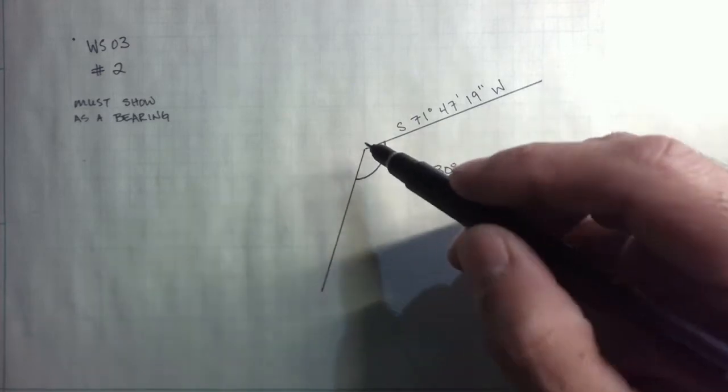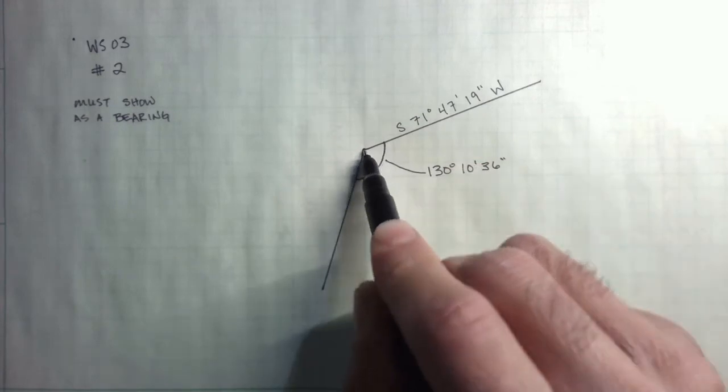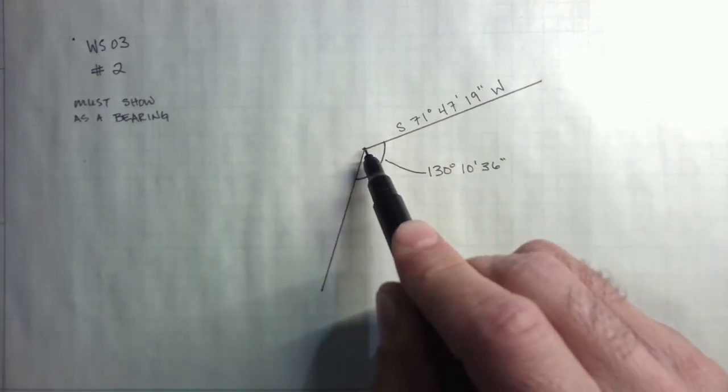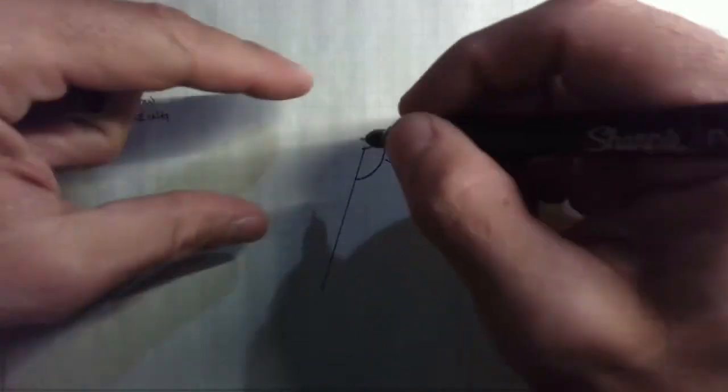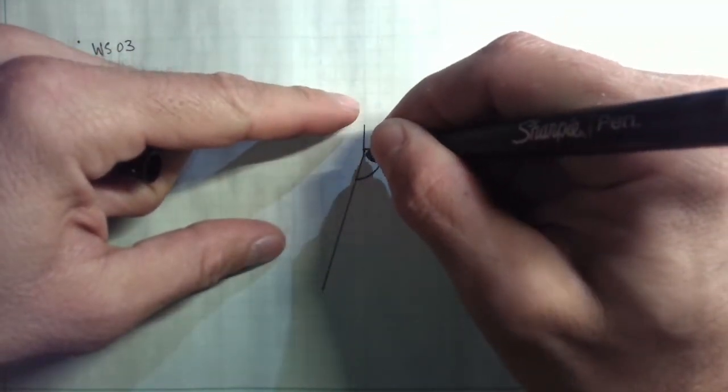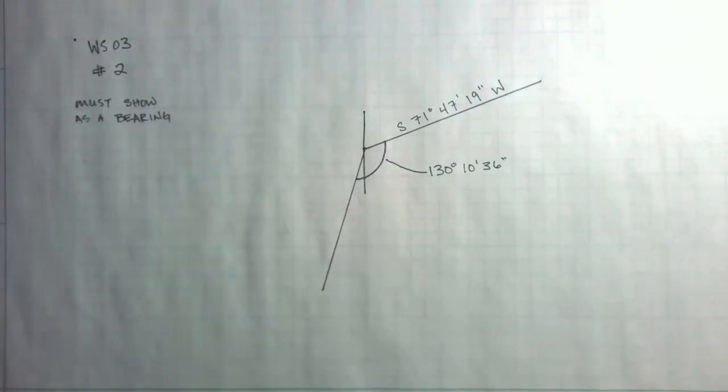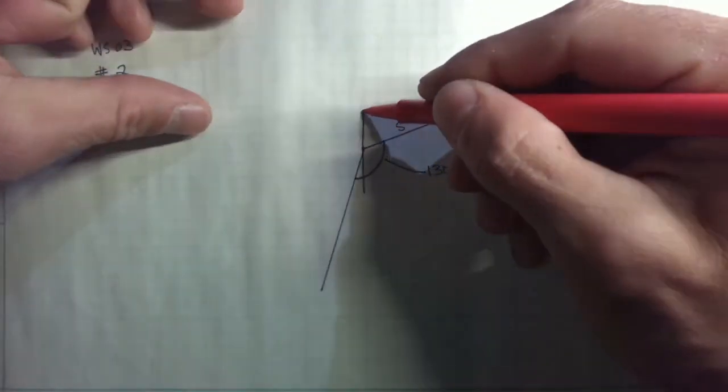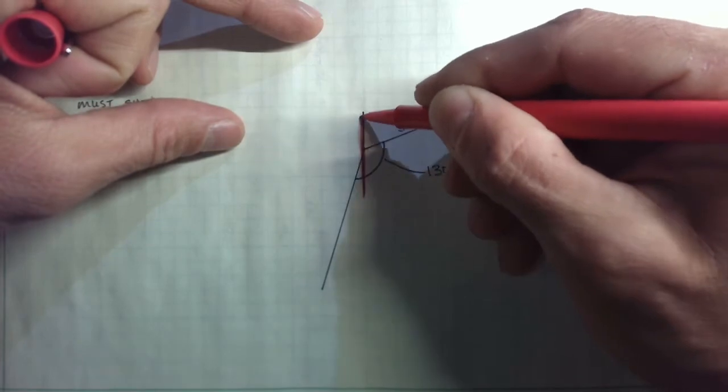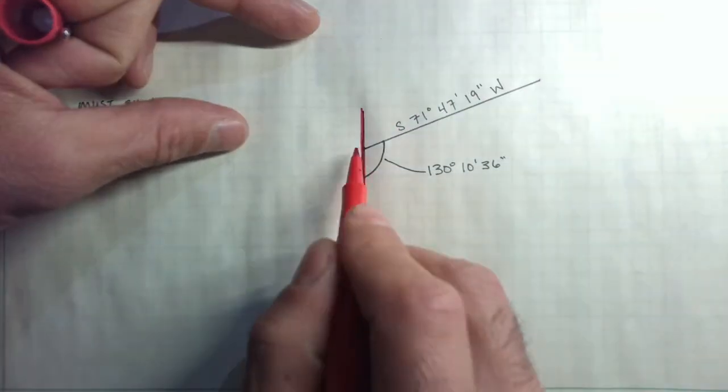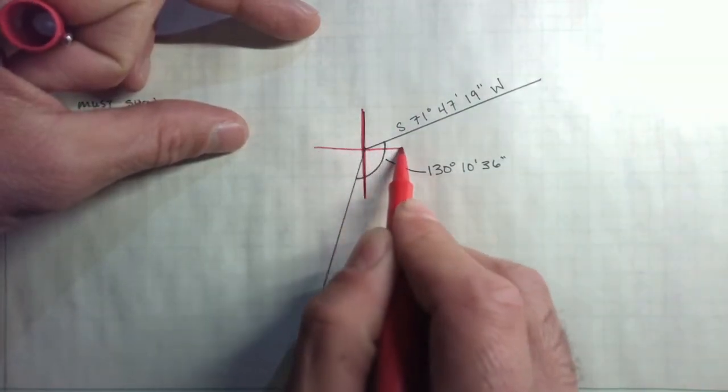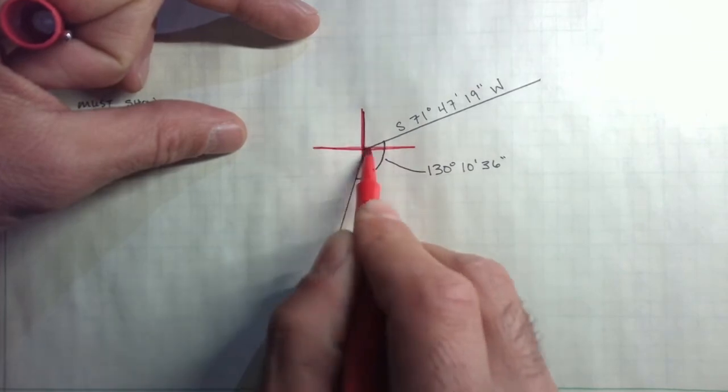And I want to imagine that I'm standing at this point where the two lines intersect. And if I'm standing at that point, it's helpful to me, I'll do this in a different color, if I draw in a north arrow. So here's my north arrow, and I'll put the compass rows in here.